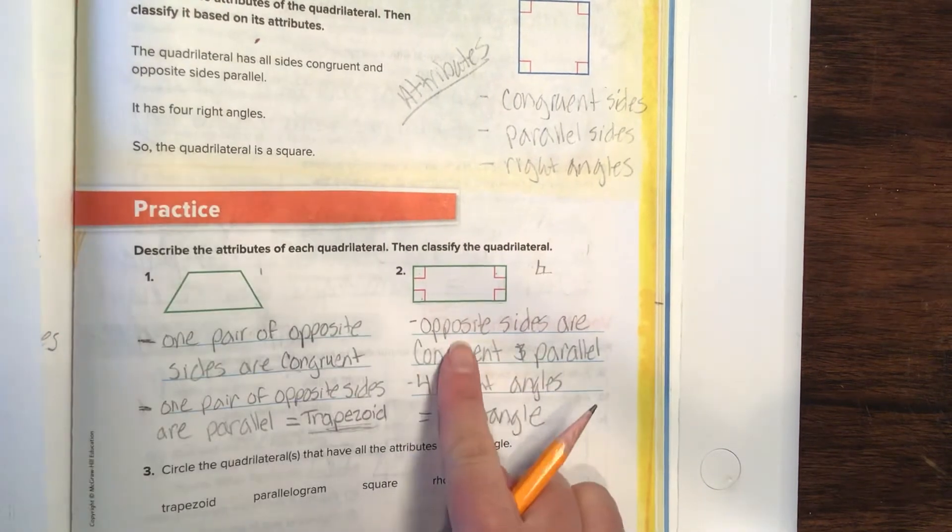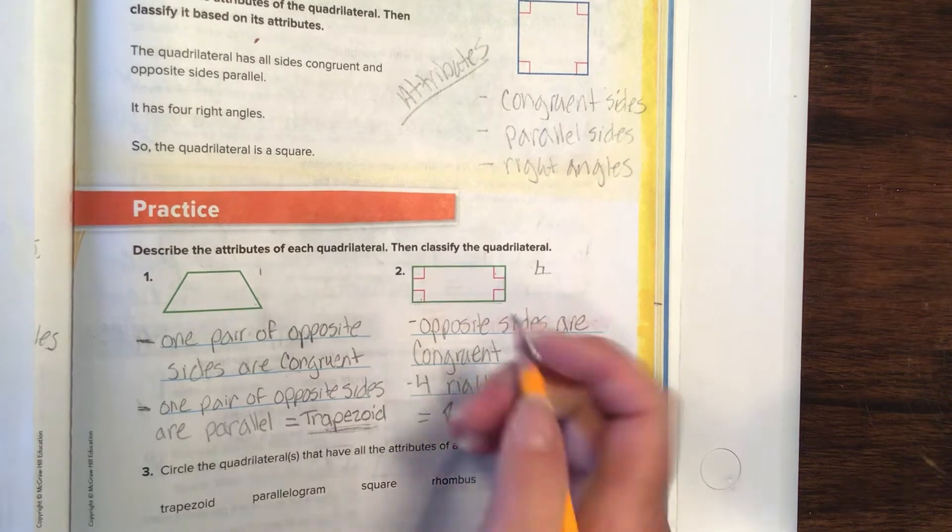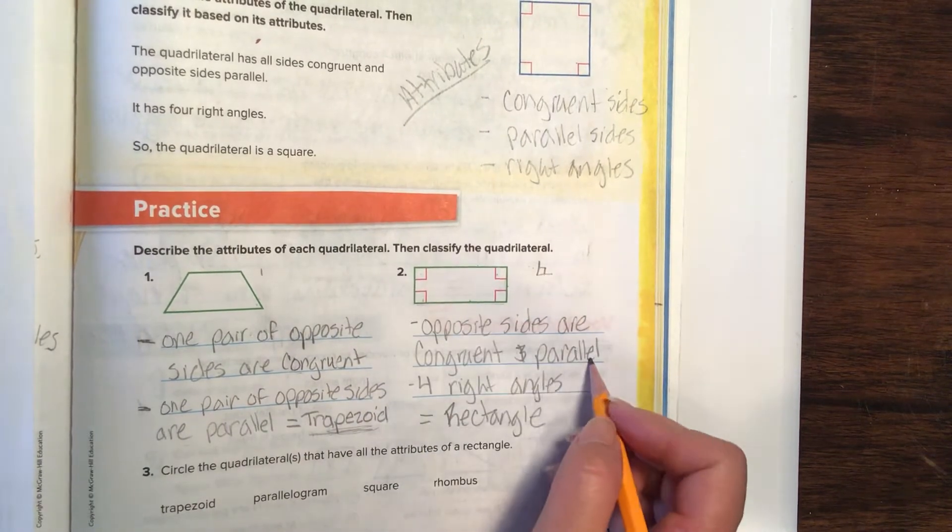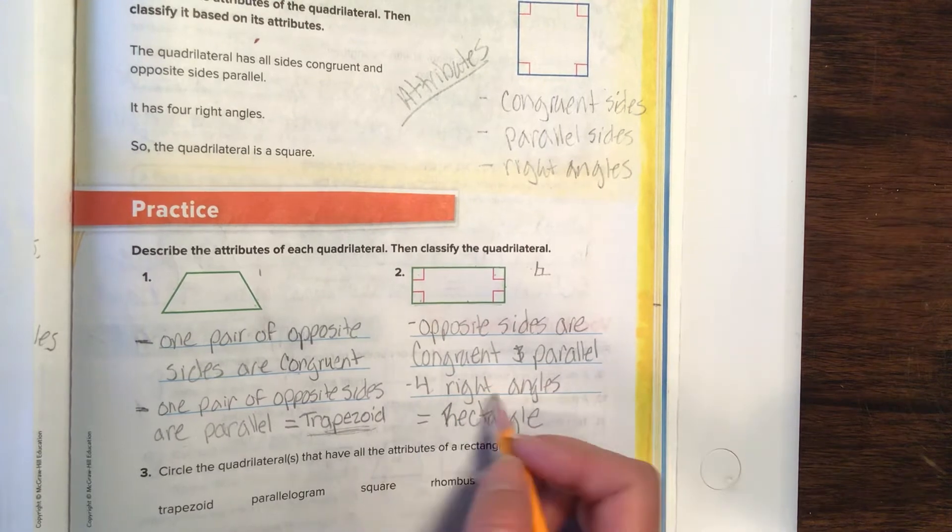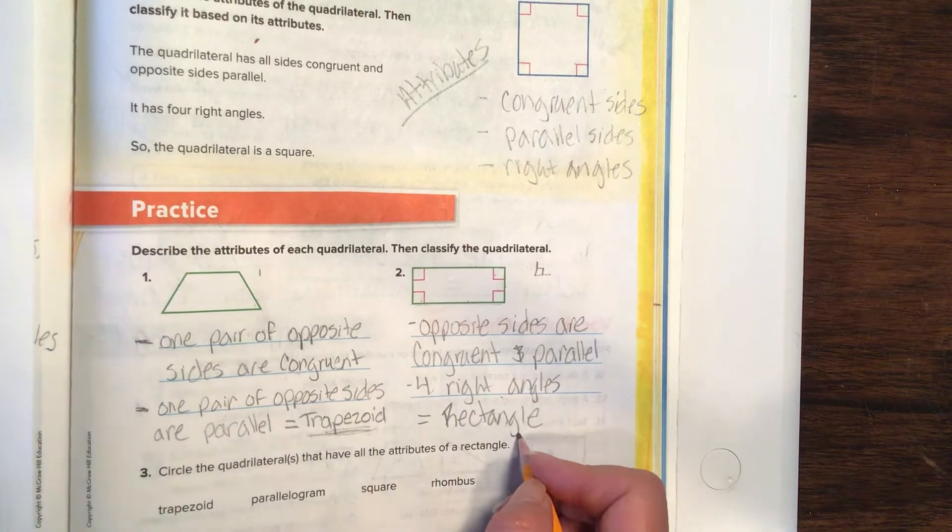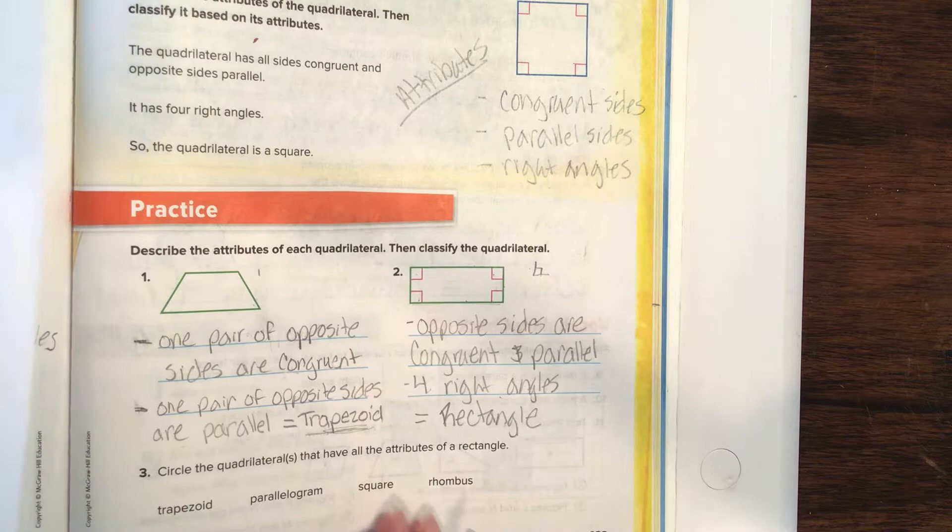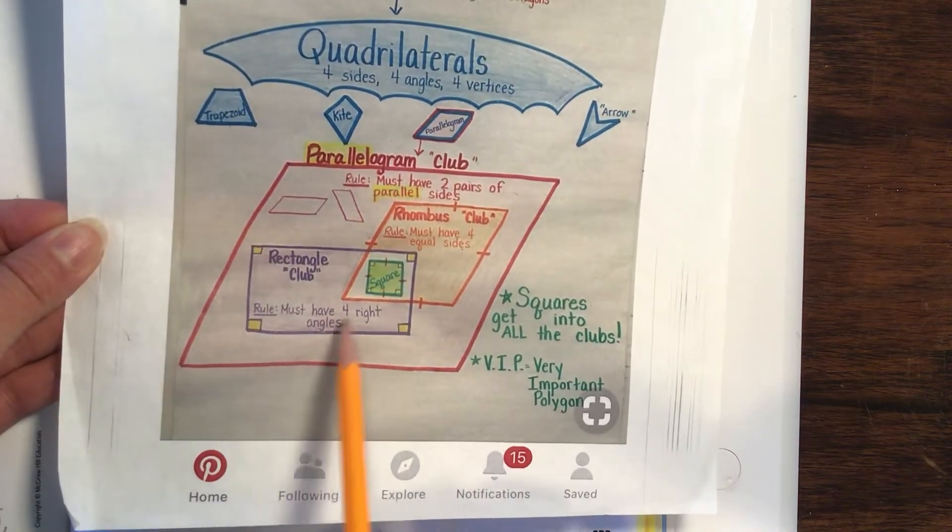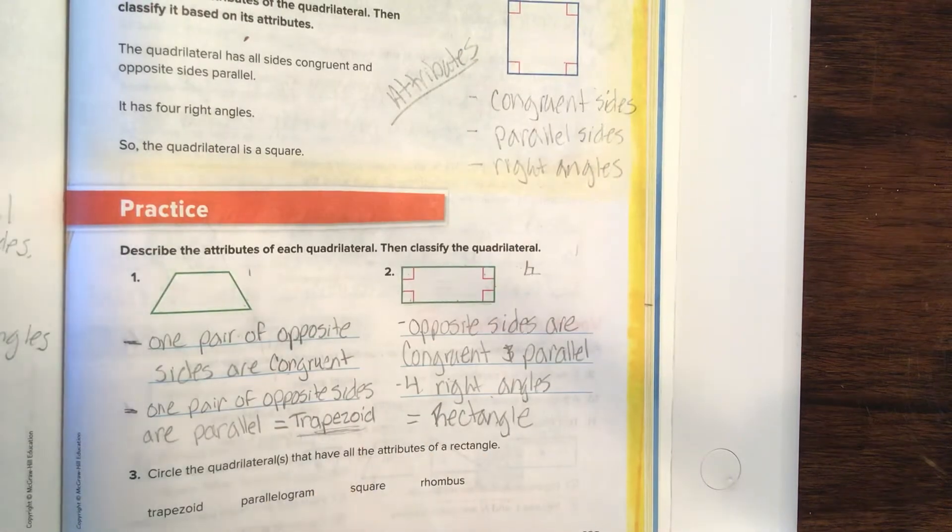So we're going to label this one. Opposite sides are congruent, which means they're the same length. Same length, same length, and they're parallel. And there's four right angles. So this cute little guy is a rectangle. Remember, a rectangle must have four right angles to fit in this club, and we've got it.